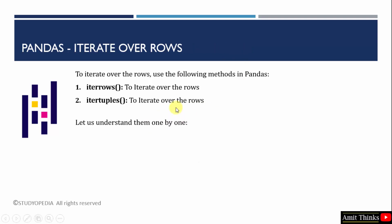To iterate over rows, we will use the following two methods: iterrows and itertuples. We will see two examples — one for iterrows and the second for itertuples.